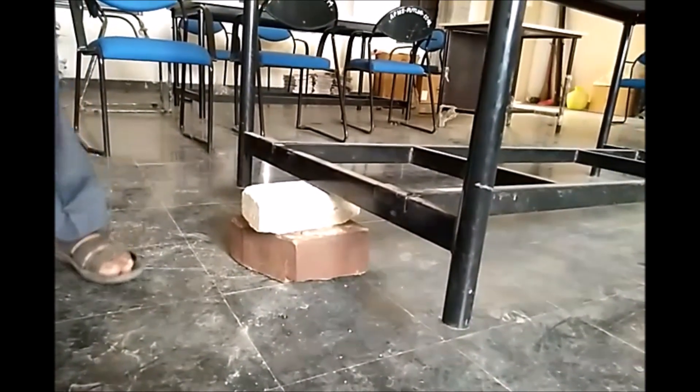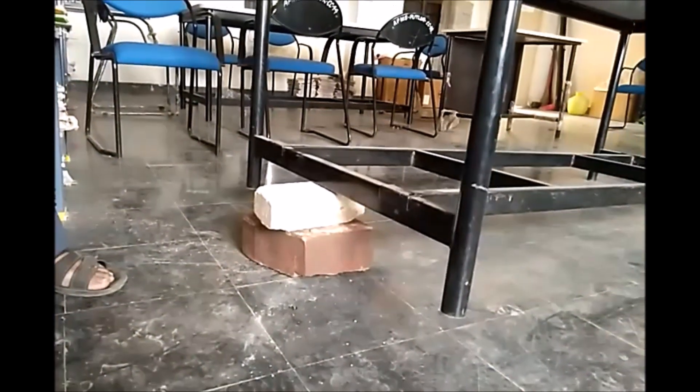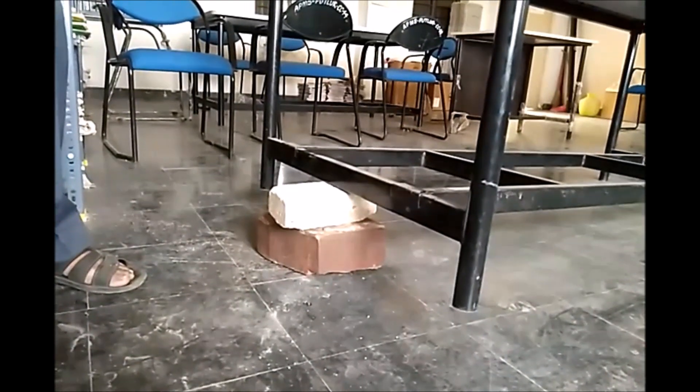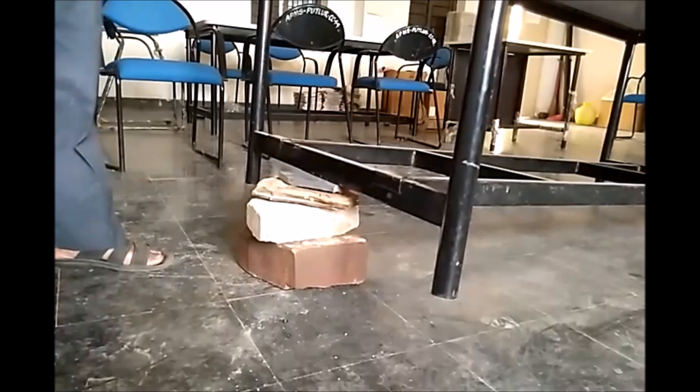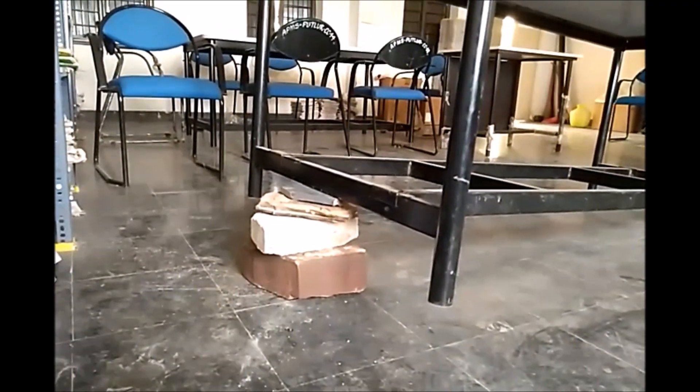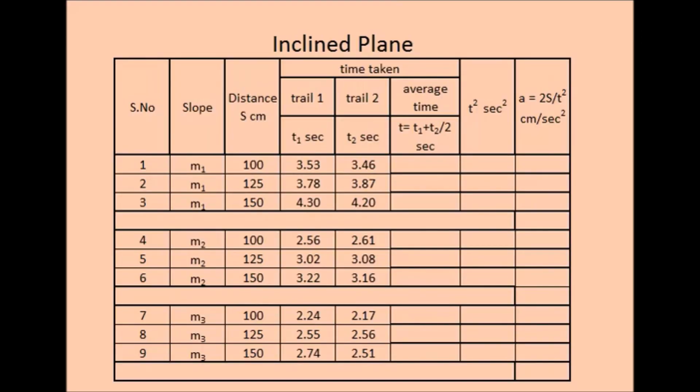Now the slope is increased from m1 to another slope m2 by adding some more mass under the bench. So the above experimental procedure is repeated and the table is filled with values. And again some mass is added. So the above experimental procedure is repeated and the table is filled with values.